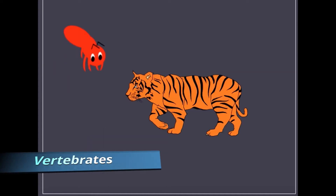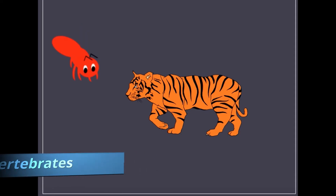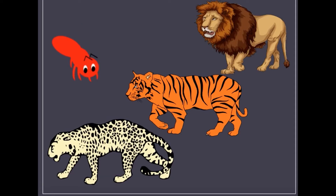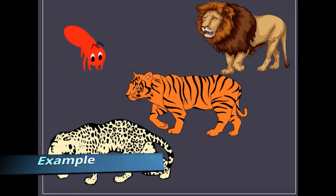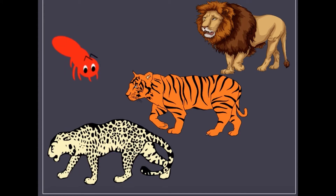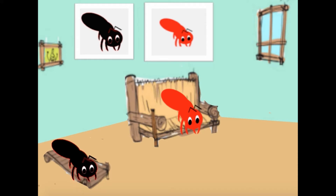Vertebrates are those who have a backbone. Vertebrate examples are lion, tiger, and leopard. Thank you for telling me, big brother, and I also know now that I am an invertebrate.